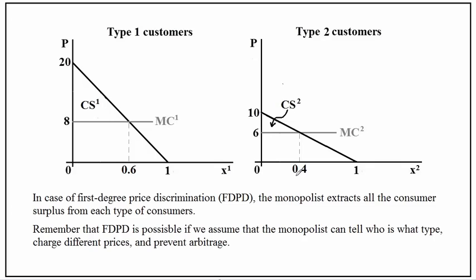In the case of first-degree price discrimination, the monopolist extracts all the consumer surplus from each type of consumer. So the per-unit price must be equal to 8, which is the marginal cost for type 1 customers, and 6 for type 2 customers.